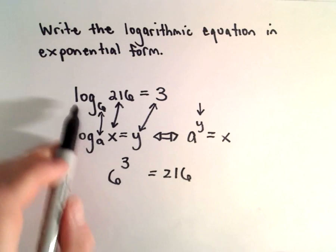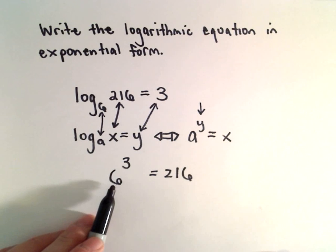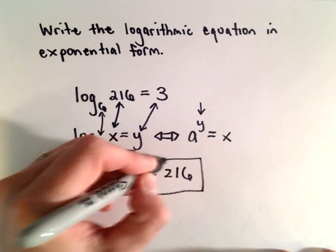So rewriting log base 6 of 216 equals 3 is equivalent to saying 6 to the 3rd power equals 216.